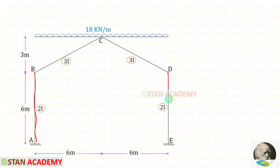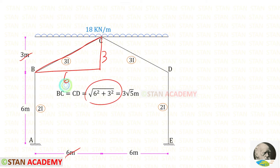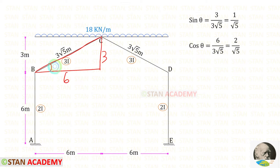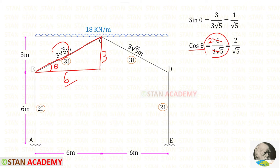The height of AB and DE is 6 meters. We need to find the inclined length of BC and CD. Taking the triangle with base 6 and height 3, we use Pythagoras' theorem: root of 6 squared plus 3 squared gives us 3 root 5. Keeping this angle as theta, sin theta equals 1 upon root 5, and cos theta equals 2 upon root 5.